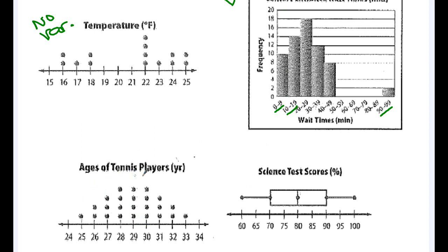Another dot plot. These are the ages of tennis players in years. So our ages are going from 25 years to 33 years. That's only an eight year spread.